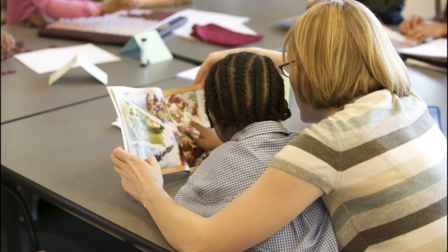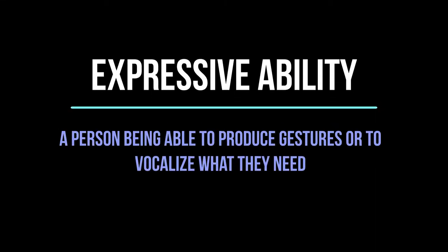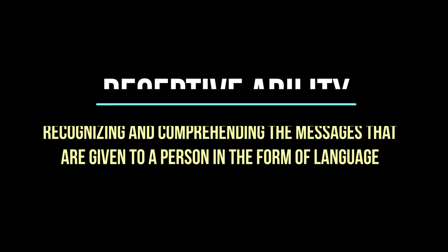When language disorder is presented at a professional level, most cases present with children having trouble acquiring and comprehending vocabulary. They usually have problems with sentence structure that is limited and behind their peers. These disparities can show through the child's speaking, writing, or use of sign language. Professionals will distinguish between expressive versus receptive ability given language. Expressive ability means a person being able to produce gestures or vocalize what they need, whereas receptive ability means recognizing and comprehending the messages given to a person in the form of language.